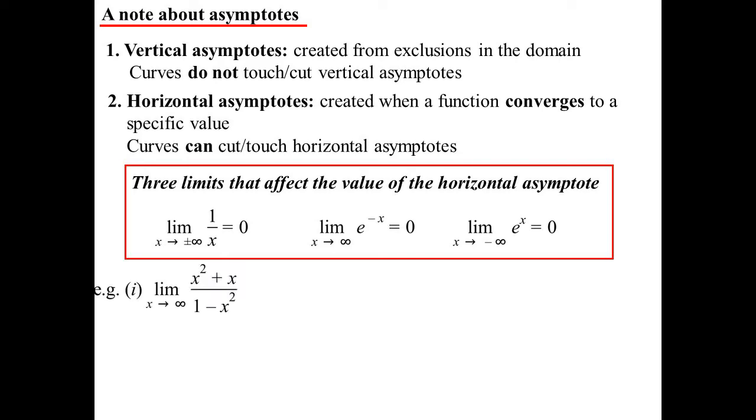So if I had to draw this curve, x squared plus x on 1 minus x squared, whatever that happens to be, if I wanted to investigate what happens out at infinity, the long way of doing it, of course, is dividing by the highest power, so x squared in this case, and we end up with 1 plus 0 and 0 minus 1, which is negative 1.